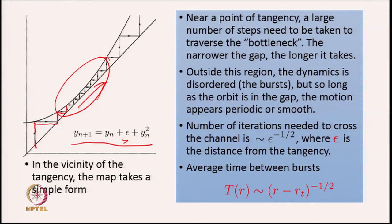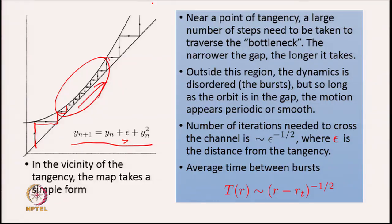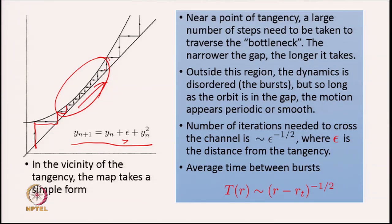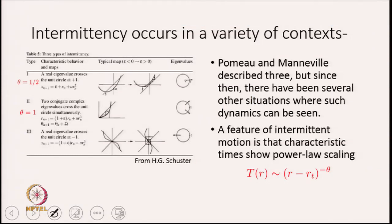The narrower the gap, the many more steps it takes; when the gap is zero it never escapes — it is on a periodic orbit. Outside this region the dynamics does whatever it does, but near the point of tangency it takes very small steps to get out. The number of iterations needed to cross this channel is of order 1/√ε, where ε is the distance from the point of tangency. Therefore, the average time between bursts goes as (r − r_t)^{−1/2}, which characterizes the intermittent dynamics.